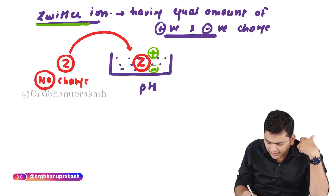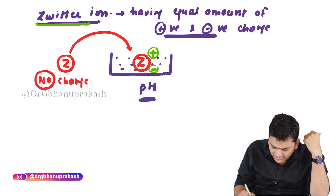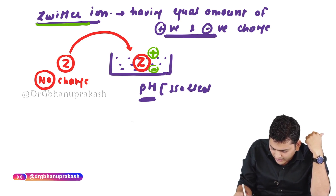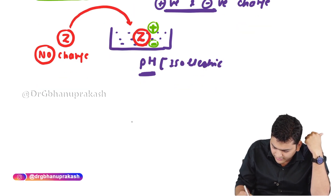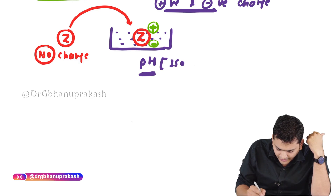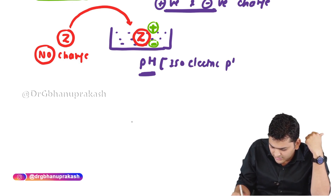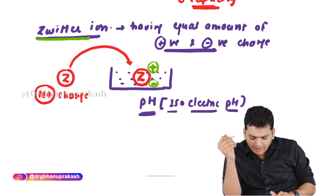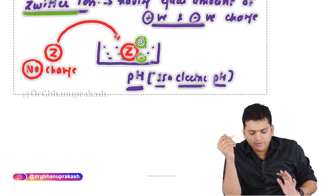Zwitter ion is produced at a specific pH. This specific pH at which zwitter ion is formed is referred to as isoelectric pH. 'Iso' means equal — equal electrical charge is generated at this pH, so it is called isoelectric pH. Zwitter ion has equal amounts of positive and negative charge, and is generated at isoelectric pH.